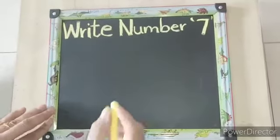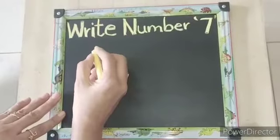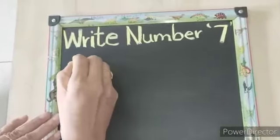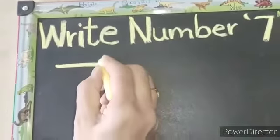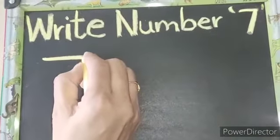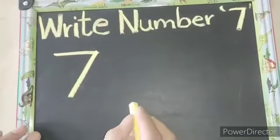So today we will write number 7. First of all, we will see the pattern of number 7: slipping line to right, without lifting your pencil, slant line to left. This is the pattern of number 7.